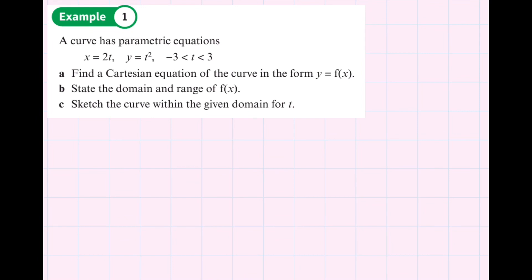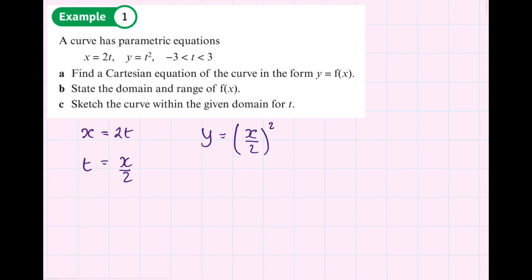The first thing we need to know is how to get a Cartesian equation from the parametric equations. A parametric equation is basically x and y in terms of a third variable — in this question it's t. They give you the range of t, between negative 3 and 3, and they want us to eliminate t. So if x equals 2t, then t equals x over 2. Substituting into y gives x over 2 all squared, which equals x squared over 4. This is the Cartesian equation — no t's involved.